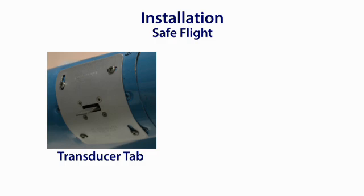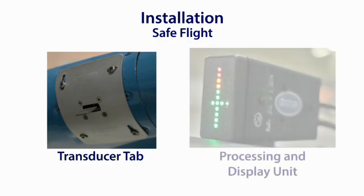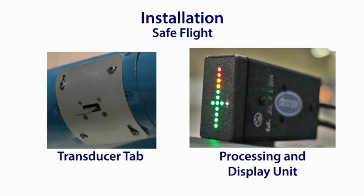The Safe Flight device utilizes a two-part system: a transducer tab installed on the leading edge of the wing, and the processing and display unit placed in the cockpit in view of the pilot. The transducer tab needs to be positioned on the leading edge of the wing and requires a hole cut in the wing. This becomes difficult, but not impossible, on composite aircraft.